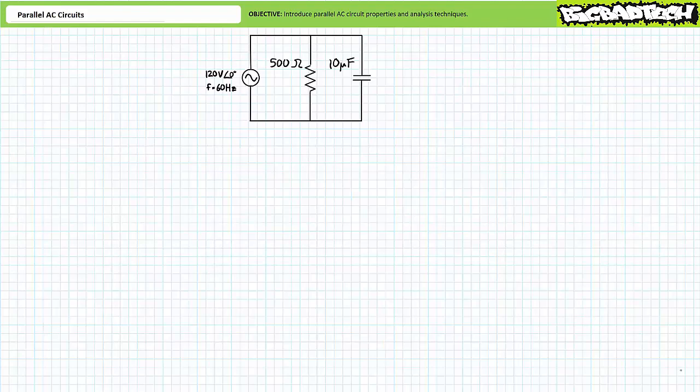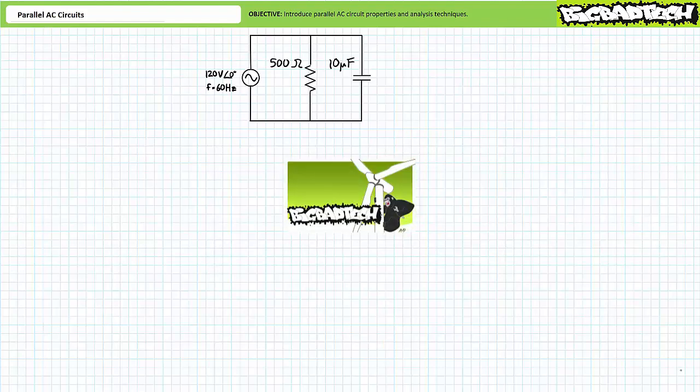Bottom line up front: parallel AC circuit analysis is parallel DC circuit analysis using phasors. I cannot make it much simpler than that. This lecture operates under the presumption the viewer is intimately familiar with fundamental parallel DC circuit properties as illustrated in the basic electronics one DC circuit analysis playlist available at the Big Bad Tech channel.